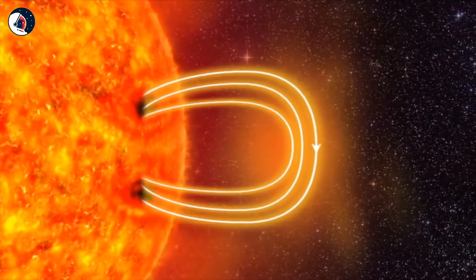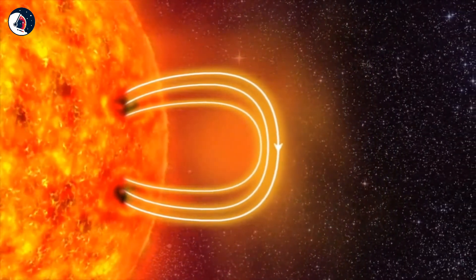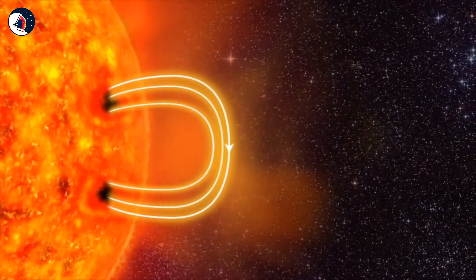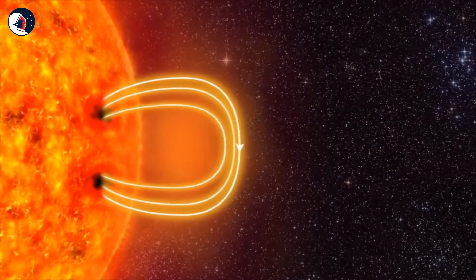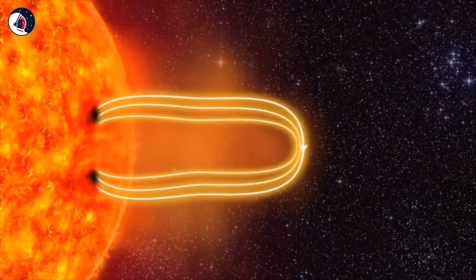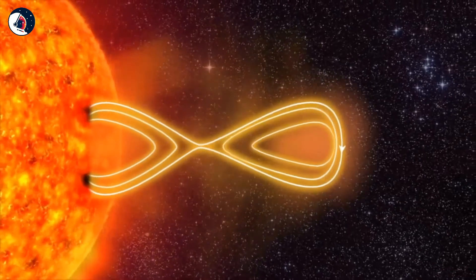The electrically charged gas is called plasma. The plasma drags the magnetic field further outwards. The magnetic field stretches and twists like a rubber band. And then the rubber band breaks.